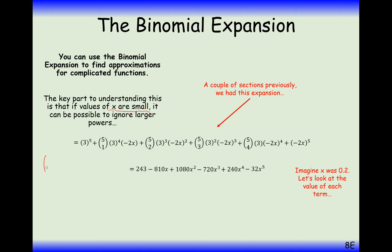We've obviously just expanded 3 minus 2x to the power of 5 here. So let's consider what happens if we plug in 0.2. So the first term, that's still going to be 243. The next term here is going to be 810 times 0.2.